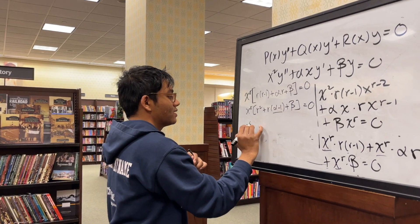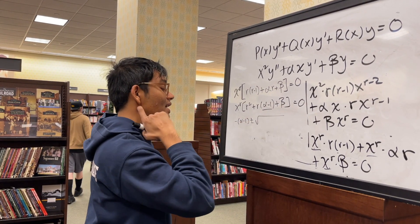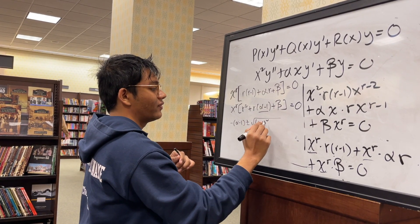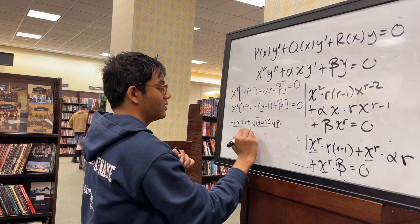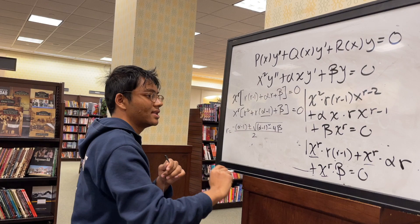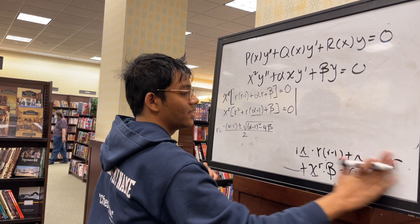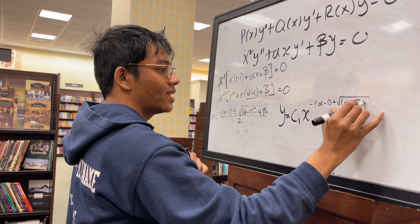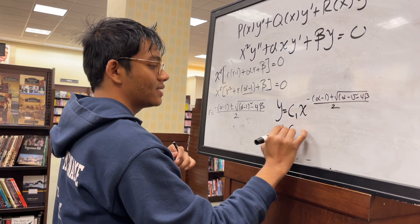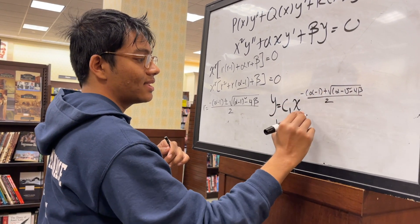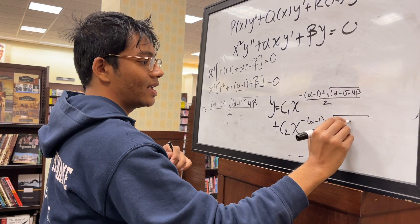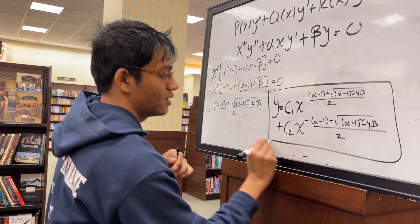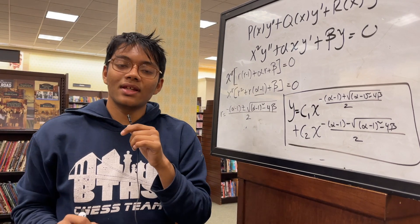Applying the quadratic formula gives r equals negative (alpha minus 1) plus or minus the square root of (alpha minus 1) squared minus 4 beta, all over 2. So the final solution is y equals c1 times x to the power of [negative(alpha-1) plus the square root of (alpha-1) squared minus 4 beta] over 2, plus c2 times x to the same expression but with the negative root. Thanks for watching, and we'll see you in the next one.